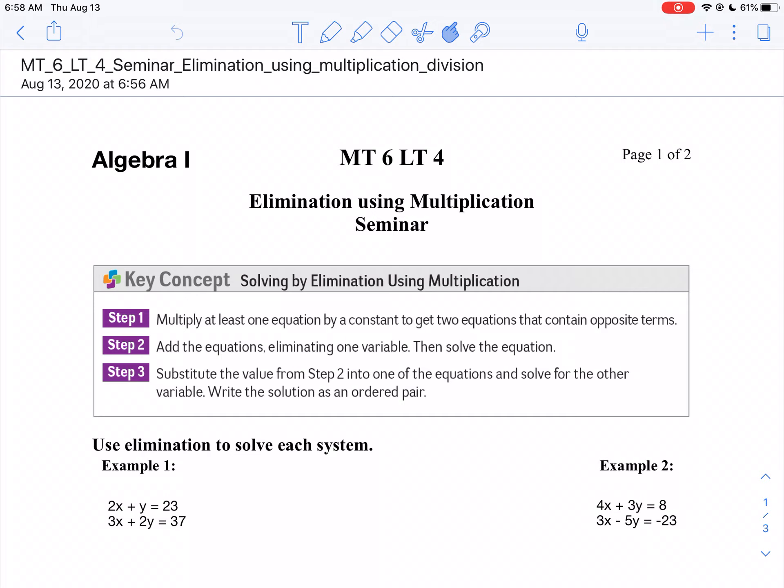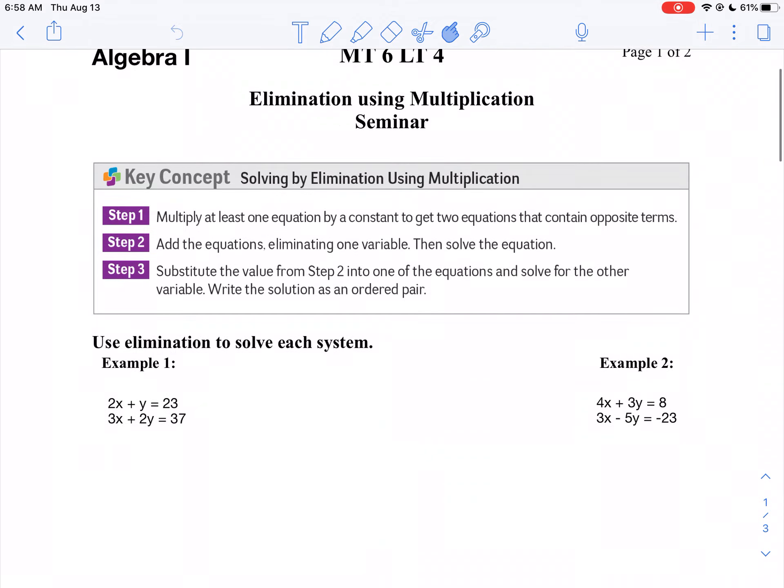What we're going to be doing here is not that much different than what we did in the last lesson. You're still going to get your variables lined up in columns, you're still going to eliminate one of them, and you're still going to solve by substitution. The difference is this time, rather than adding and subtracting, we might be multiplying.